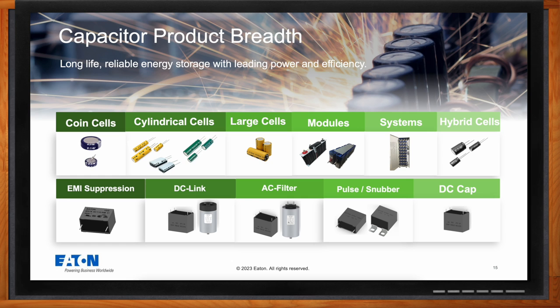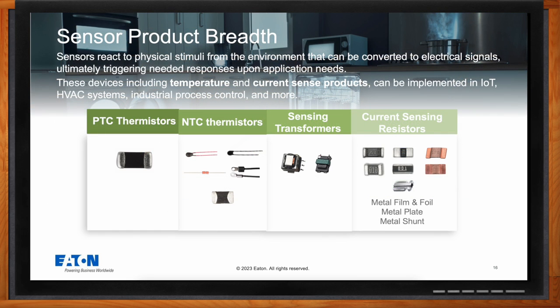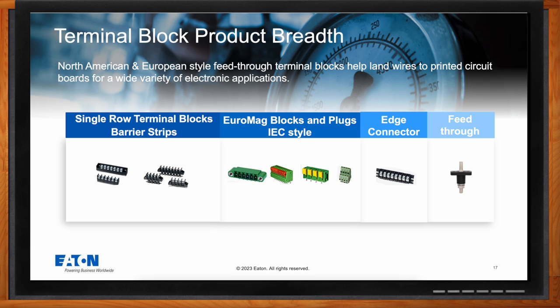A wide range of PTCs and NTCs in various form factors is available for different applications. Surface mount resistors and through-hole transformers are available for AC and DC current sensing requirements. The terminal block product line includes single-row standard and Euromech terminal blocks, edge connectors, and feed-through connectors, designed to provide reliable electrical connection and connectivity solutions.